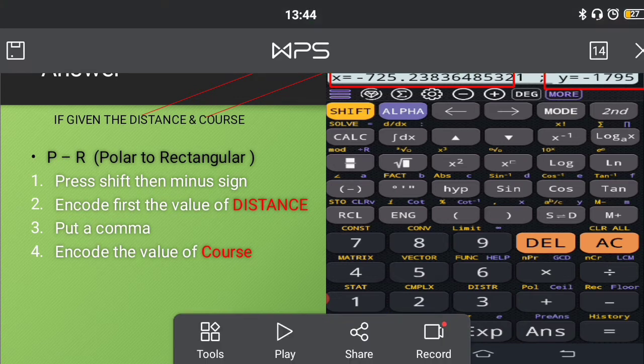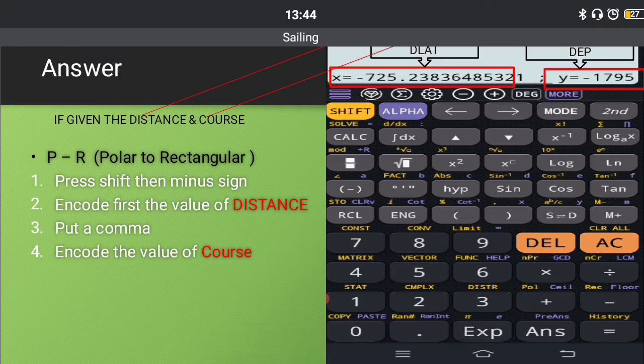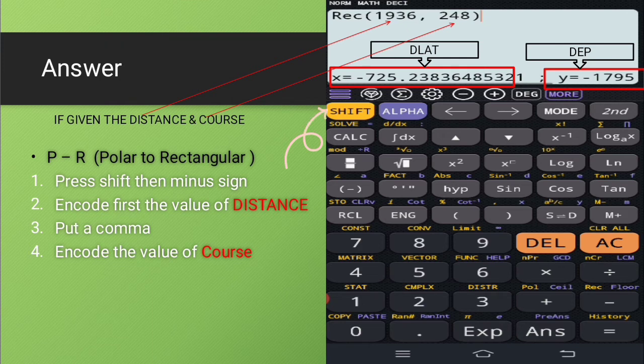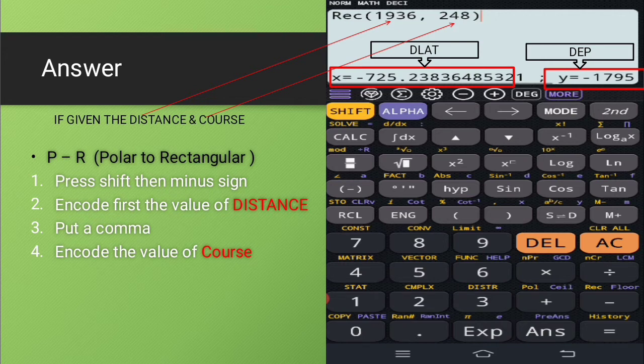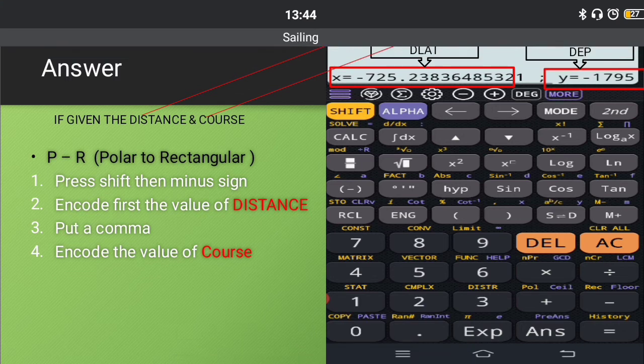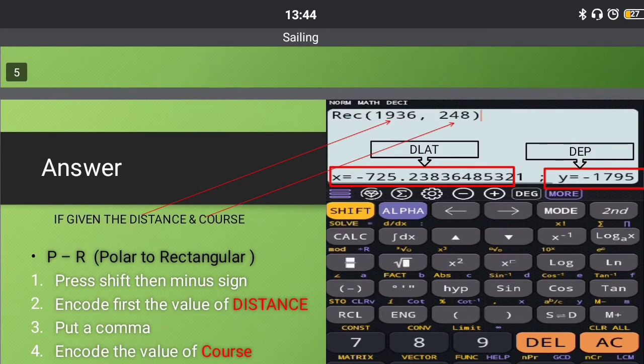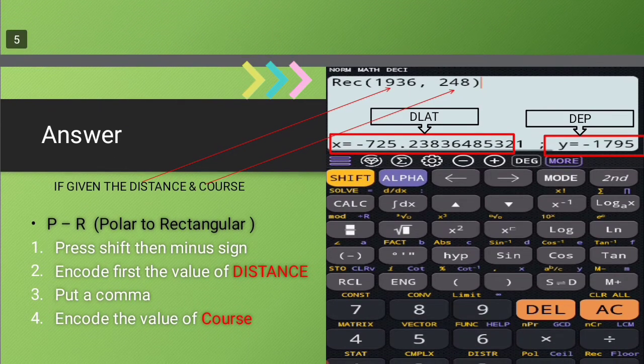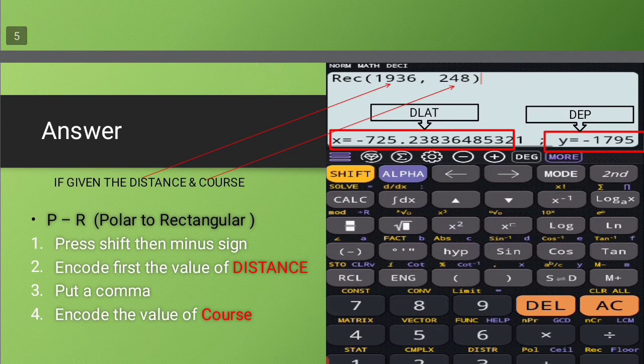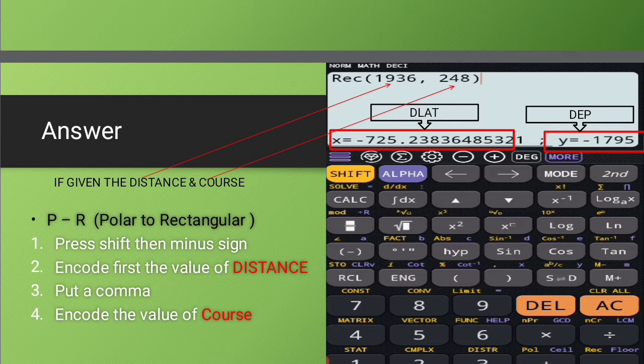And right after pressing the shift button, you should also press the minus sign. So there will be a word, REC, which will appear after you press shift then minus sign.